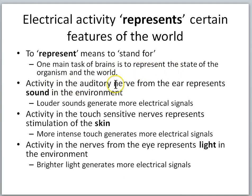So activity in the auditory nerve from the ear represents sound in the environment. Louder sounds generate more electrical signals. Activity in the touch sensitive nerves represents the stimulation of the skin. More intense touch generates more electrical signals. Activity in the nerves from the eye represents light in the environment. Brighter light generates more electrical signals.